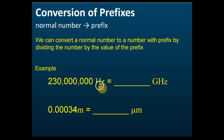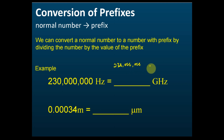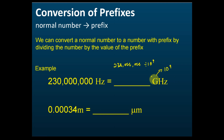For example, 2,300,000,000 hertz — we want to write it in gigahertz. So we write 2,300,000,000 and divide by giga. Giga equals ten to the power of nine, so we divide by ten to the power of nine. For normal number to prefix we divide, and this equals 0.23.